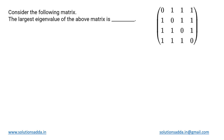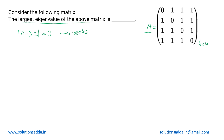This is an engineering mathematics question based on matrices. We have a 4×4 matrix, let us call it A, and we are asked to find the largest eigenvalue. The traditional way is to find its characteristic equation first, then find the roots — the largest root gives us the eigenvalue.